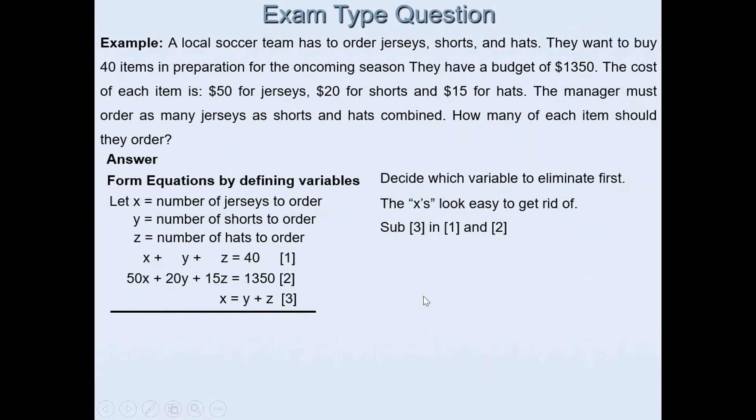The first equation now becomes: x is same as y + z, so (y + z) + y + z = 40. We can quickly simplify that. y + y is 2y and z + z is 2z, so 2y + 2z = 40. That's our fourth equation.